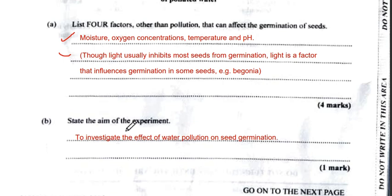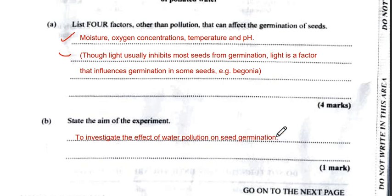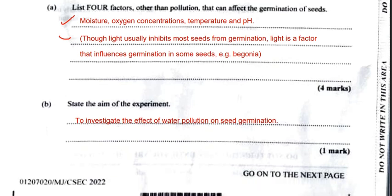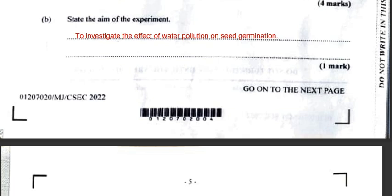The next question asks for the main aim of the experiment. The aim would be to investigate the effect of water pollution on germination — specifically on seed germination. We receive one mark for that question.